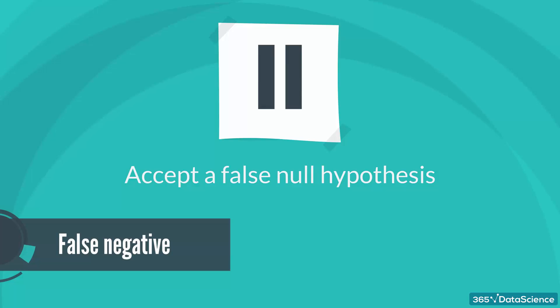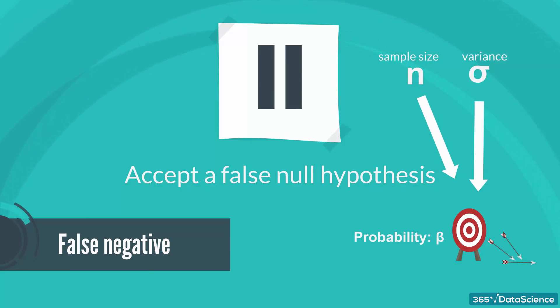Type 2 error is when you accept a false null hypothesis. The probability of making this error is denoted by beta. Beta depends mainly on sample size and population variance.